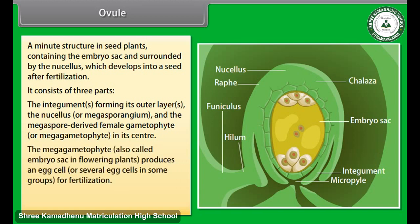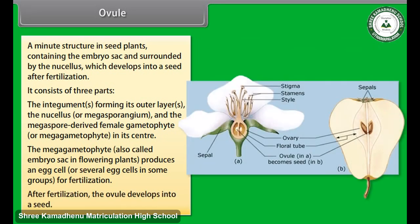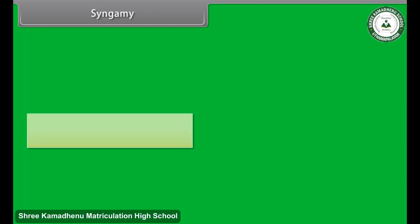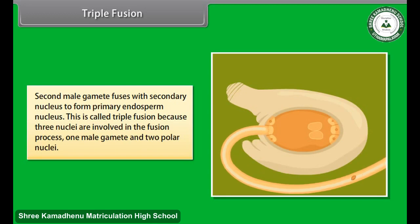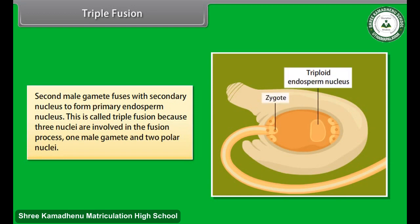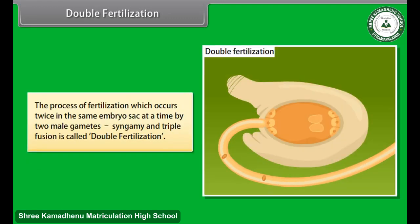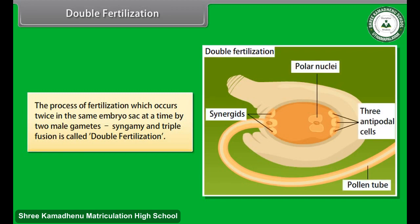The megagametophyte, also called the embryo sac in flowering plants, produces an egg cell for fertilization. After fertilization, the ovule develops into a seed. In syngamy, one of the male gametes fuses with the egg to form a diploid zygote. In triple fusion, the second male gamete fuses with the secondary nucleus to form the primary endosperm nucleus. This is called triple fusion because three nuclei are involved — one male gamete and two polar nuclei. The process where both syngamy and triple fusion occur in the same embryo sac at the same time is called double fertilization.